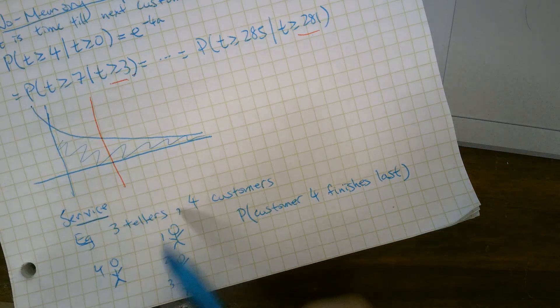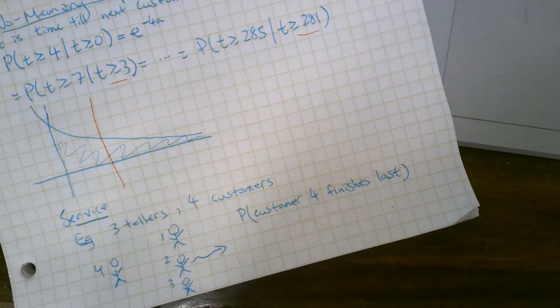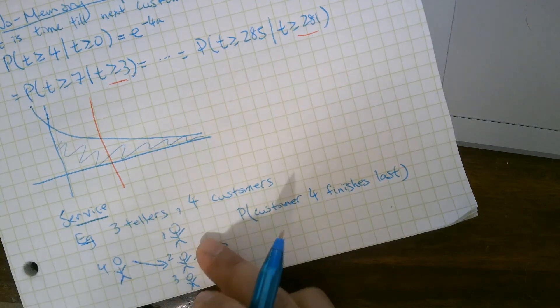But what does the no-memory property say? Well, one of these customers is going to finish first and they're going to leave. Let's say it's customer two. Customer two leaves, customer four comes here, and then teller two is now helping customer four.